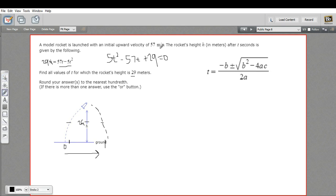Our b is negative 57, so a negative b is positive 57. And then we have plus or minus the square root of, and our discriminant here is negative 57 squared minus 4 times 5 times 29. Okay, so we've got some big numbers here. And then all of that goes over 2 times a, which would be 10.